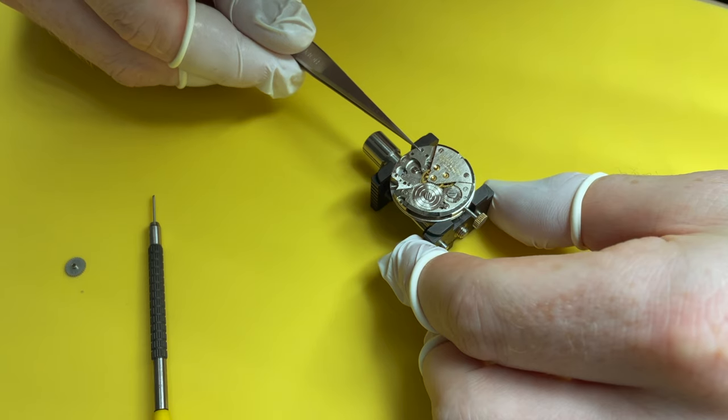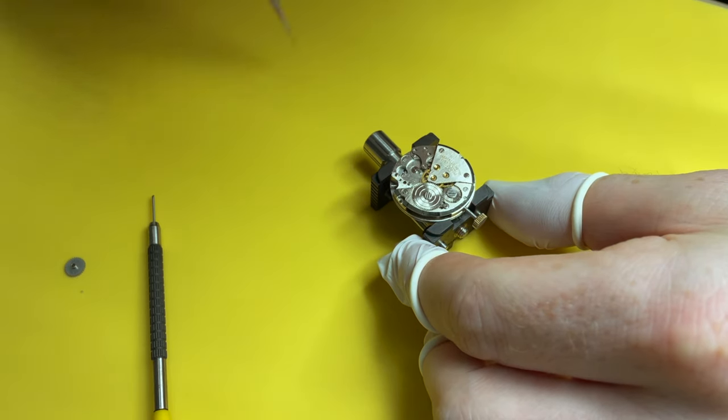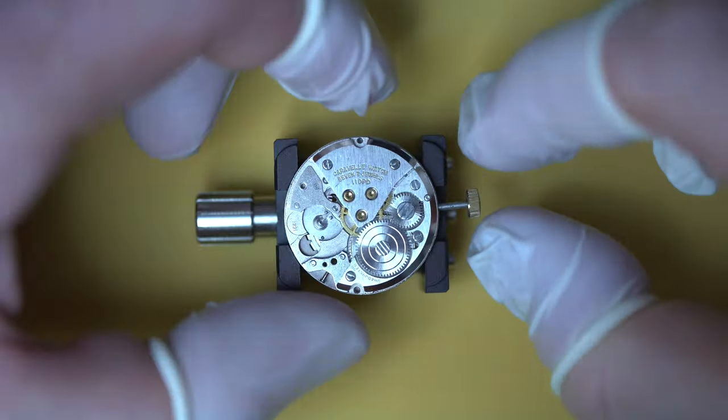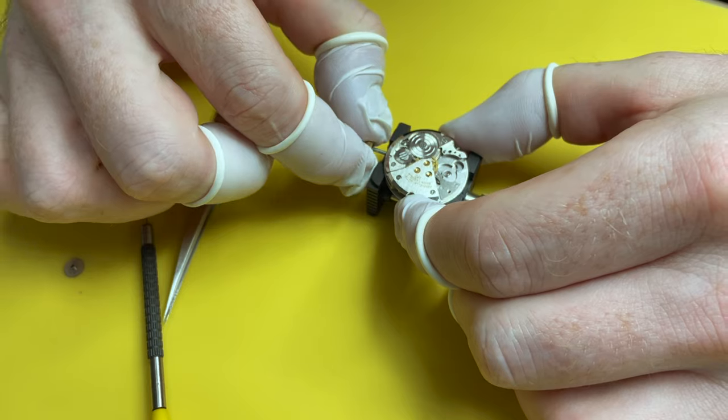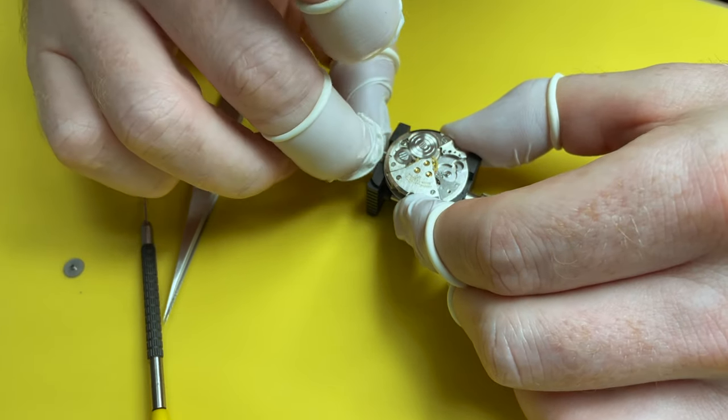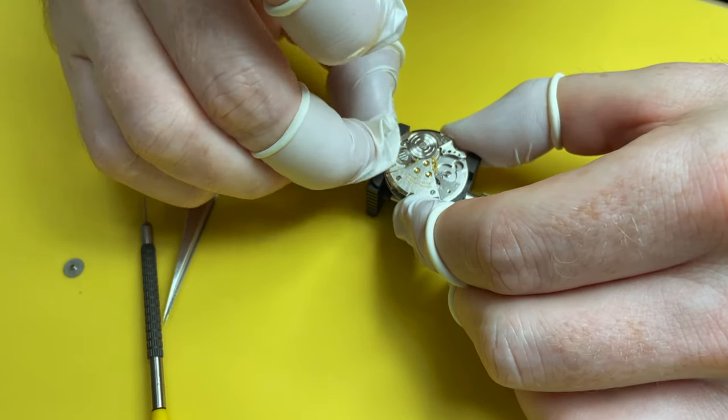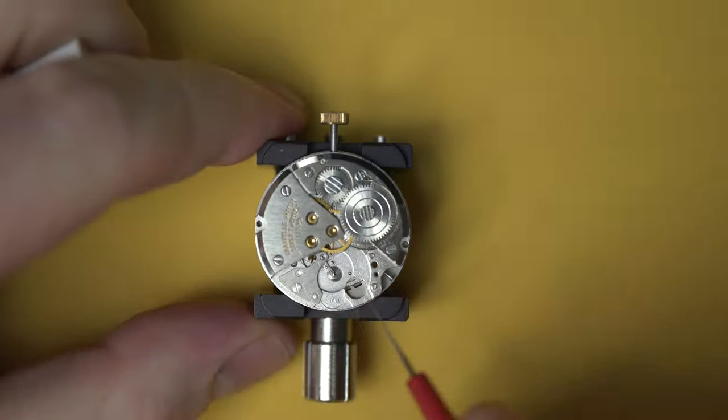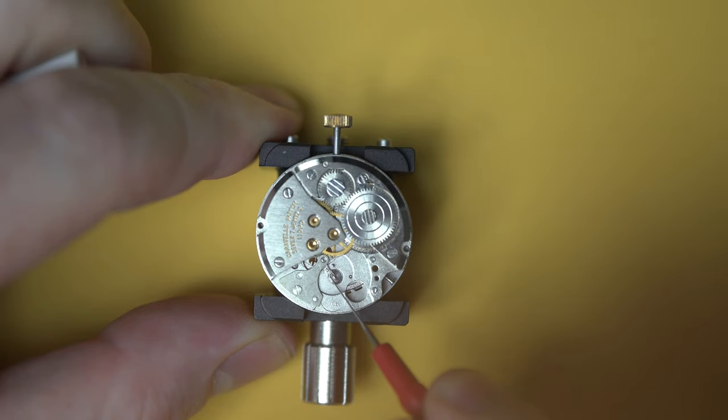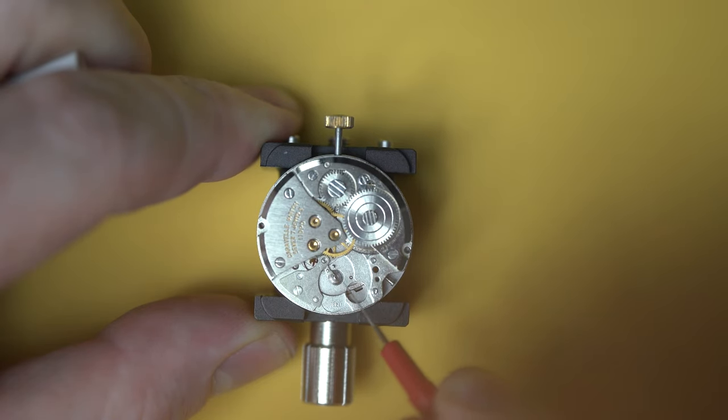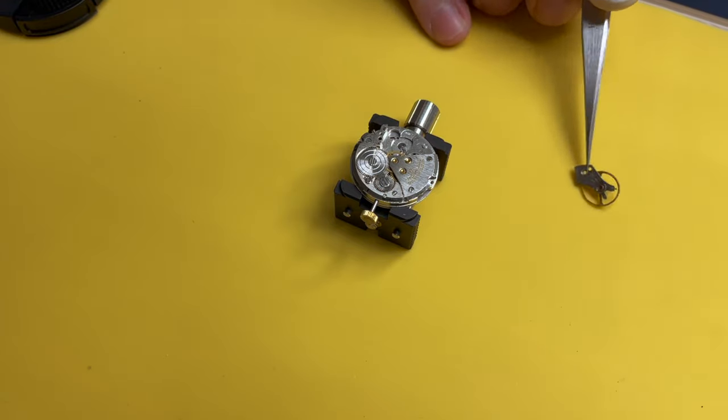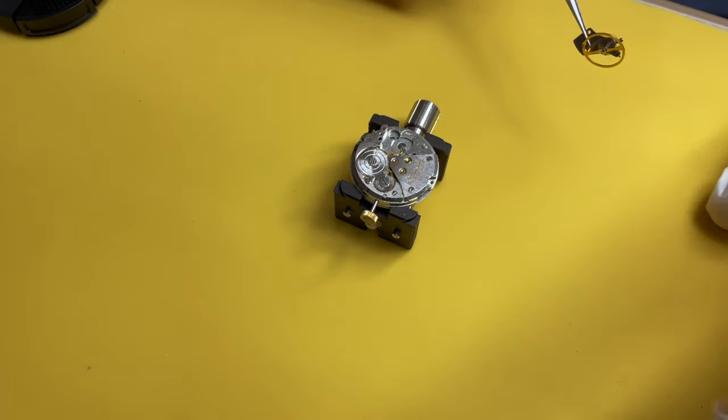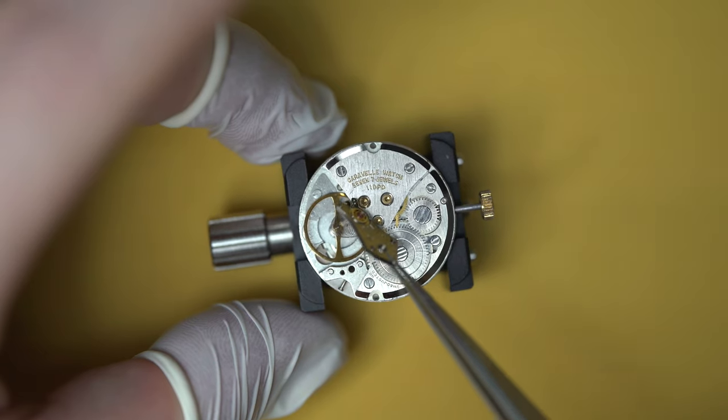So the pallet fork going on here. This pallet fork is the part of a watch that actually makes the ticking noise. So when you hear a watch, you hear that tick-tick-tick. What that is, it's actually the pallet fork stones engaging with the escape wheel. So there I was just, I wound the watch a bit, I flipped the pallet fork over just to make sure that power was running through. And it seemed like there was quite a decent bit of power there. So that gives us promise that we're on the right track.